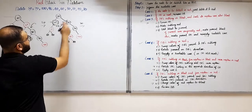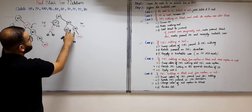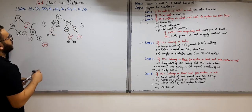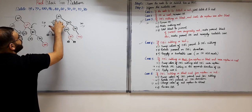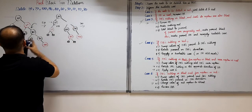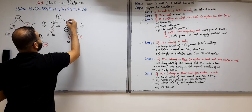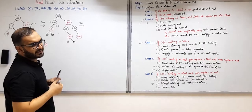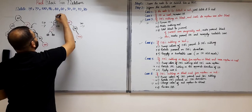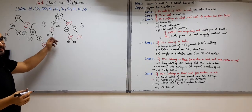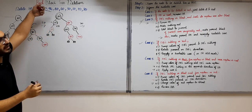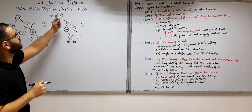The sibling of this new double black is 80, which is black, and both its nephews 60 and 90 are also black. So again we are talking about Case 3. We remove the double black, make sibling 80 red, and add black to the parent. Because the parent was originally not red, we make the parent double black again — the double black has percolated up to node 40.